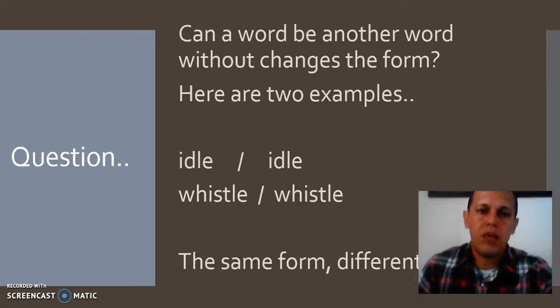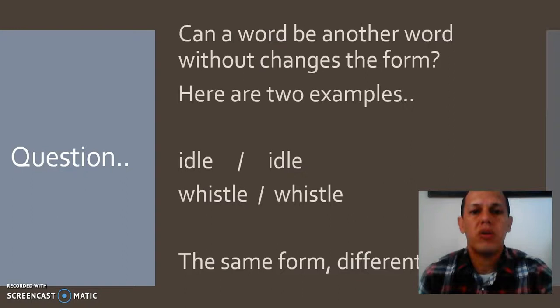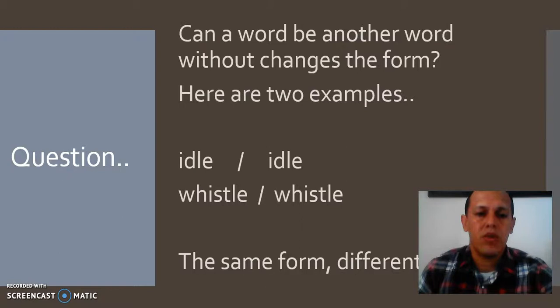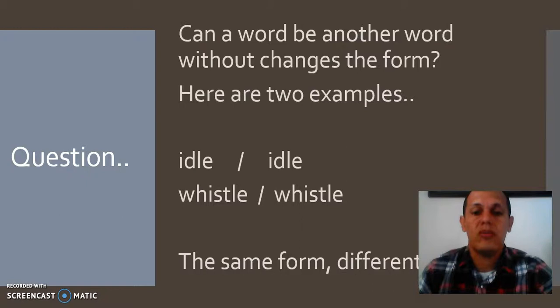I would like to start with the trigger question: can a word be another word without changing the form? Here are two examples. We have the word 'idle' as a noun and 'idle' as a verb. Another example is 'still' as an adjective and 'still' as a verb. So the same word form, but these two words have different meaning.